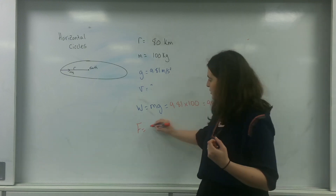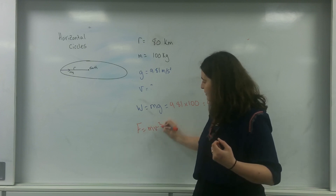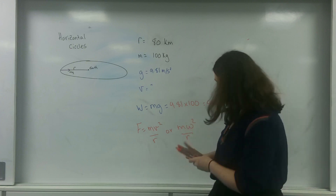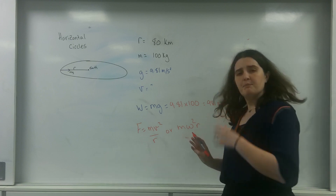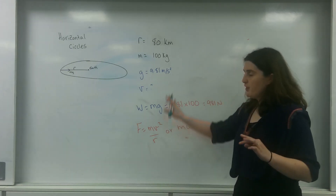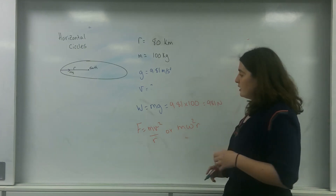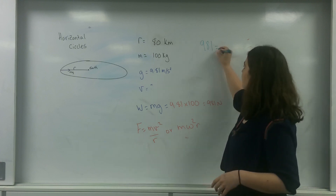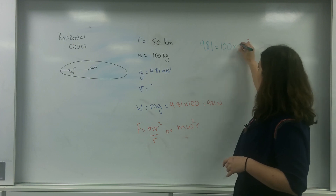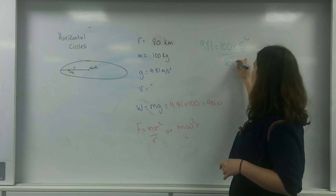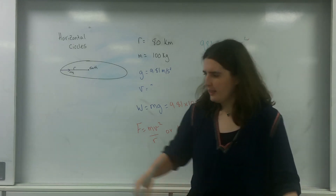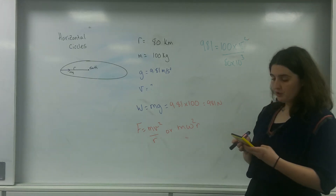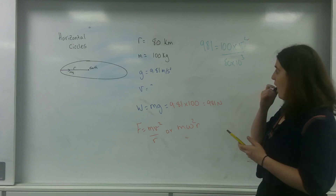I know that in circular motion the resultant force F equals mv squared over R, or m omega squared R — both of these are on your datasheet. Since I'm trying to find velocity, I'm going to use mv squared over R. So the resultant force is 981, equal to 100 times v squared over 80 times 10 to the 3. Let's put this in: I've got 100 divided by 80 times 10 to the 3.